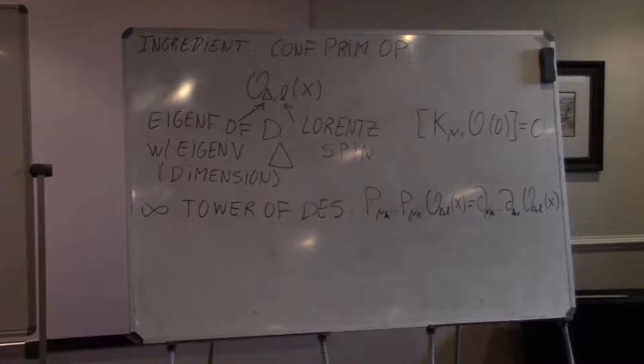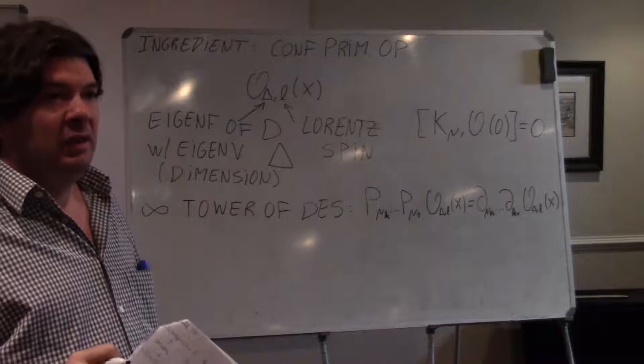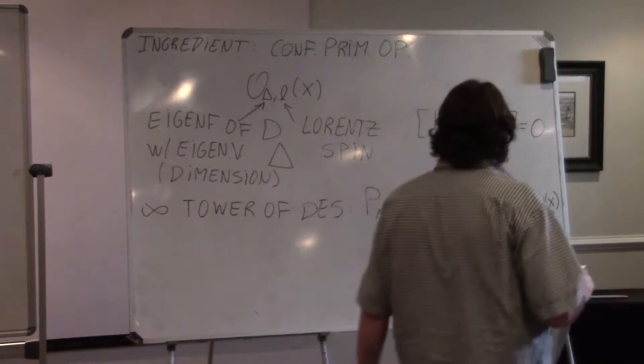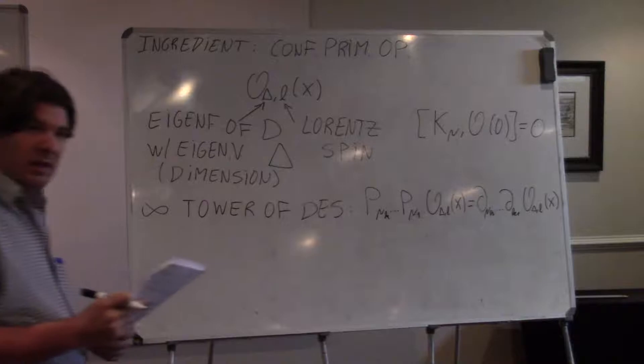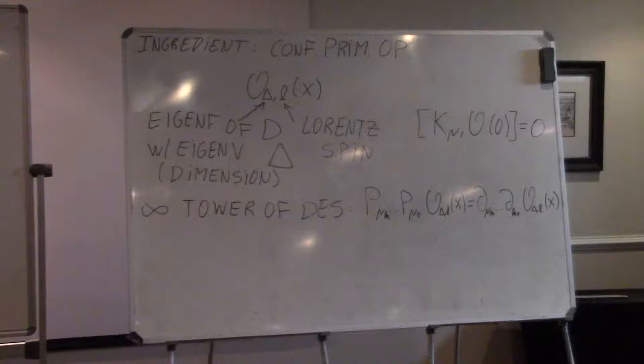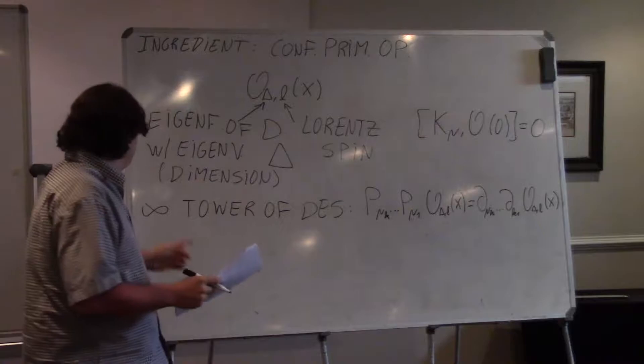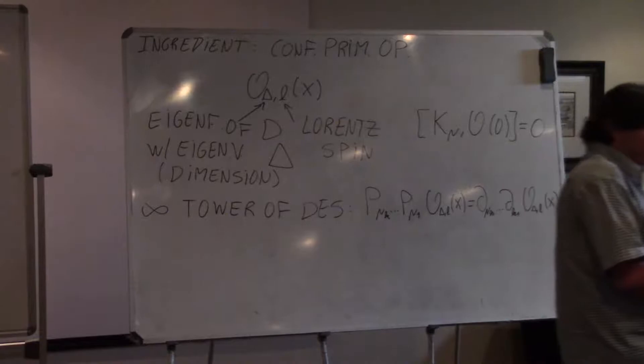Question: when you say Lorentz spin, are you in Lorentzian signature? I will be very imprecise about that. I will be in Minkowskian signature, and it will be important to be in Minkowskian signature — I will tell you precisely when I use that fact. But still you denote mu from 1 to d; I can use 0 to d minus 1 if you wish. But it's actually a very important question and later I will go back to that.